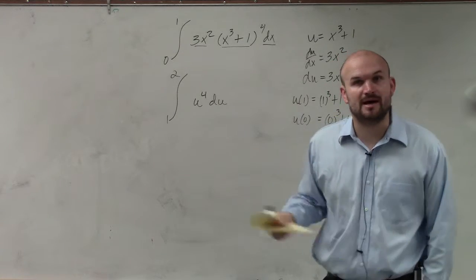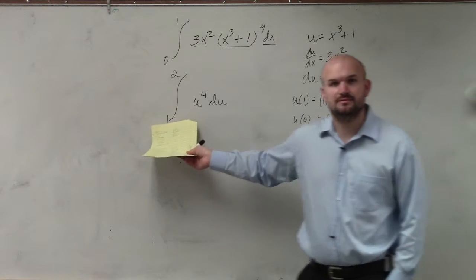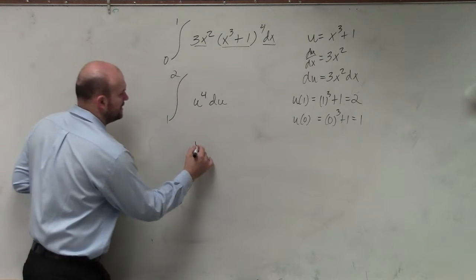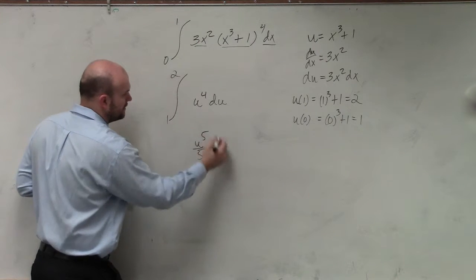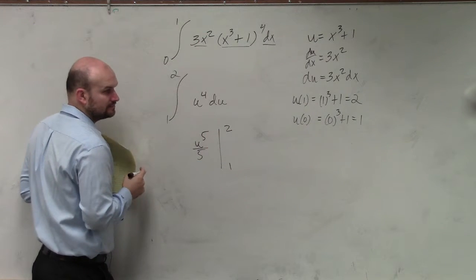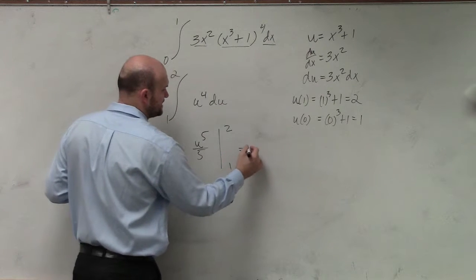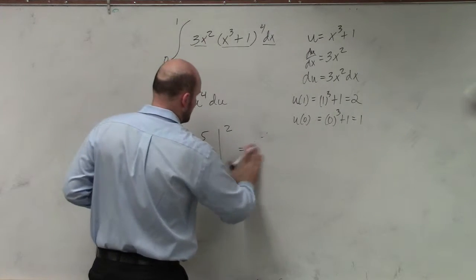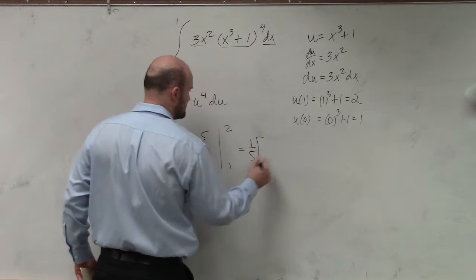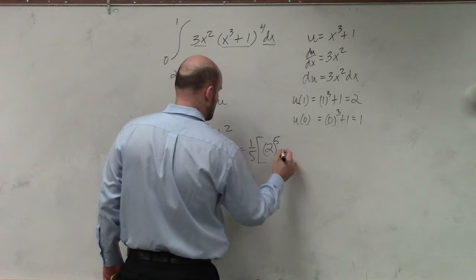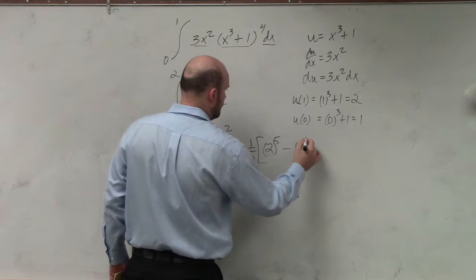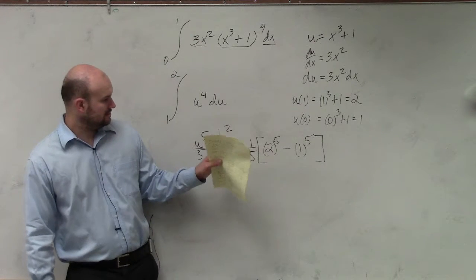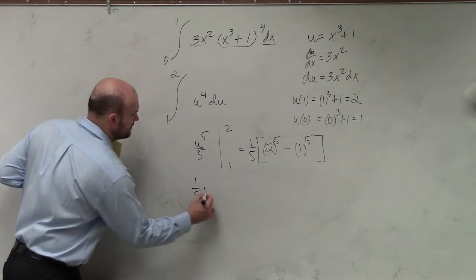Do you see how I changed my upper and lower bounds? Now we just need to integrate this. That becomes u to the fifth divided by 5, integrating from 1 to 2. So that's 1/5 times 2 to the fifth power minus 1 to the fifth power. I just rewrote that as 1/5 times u to the fifth, evaluated at the new bounds.